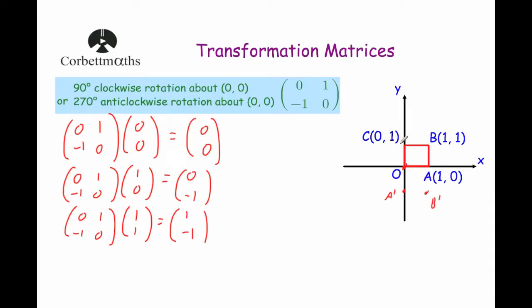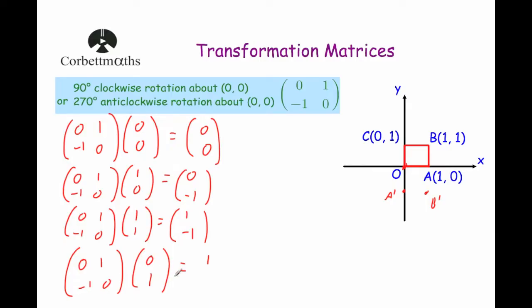And finally, the point C. So if we take our matrix 0, 1, minus 1, 0 and multiply it by the point C, 0, 1, we get: 0 times 0 is 0, 1 times 1 is 1, adding them together is 1. And then the second row times the column: minus 1 times 0 is 0, 0 times 1 is 0, so that gives coordinates 1, 0. So the point C will be rotated 90 degrees clockwise about the origin to the point 1, 0.